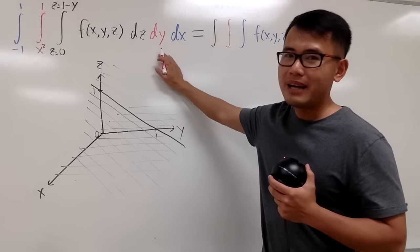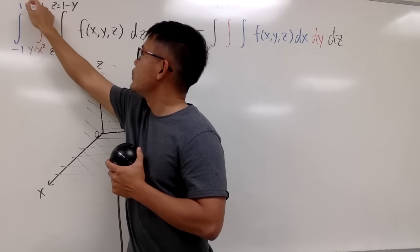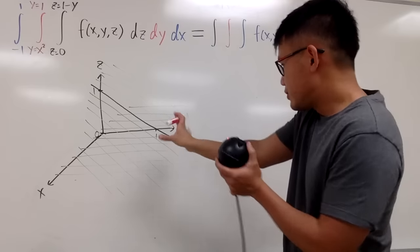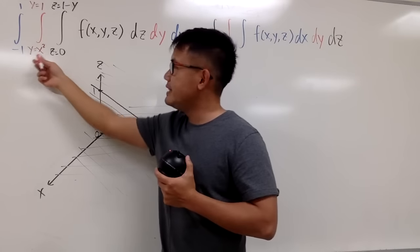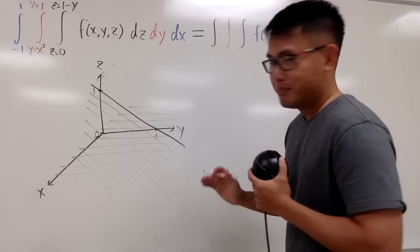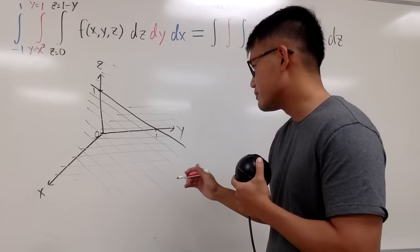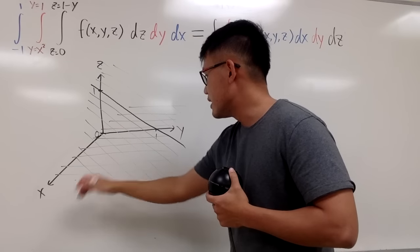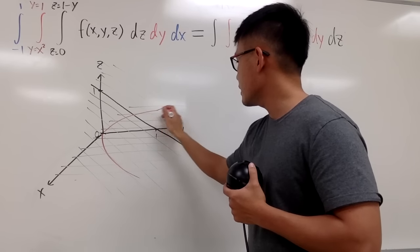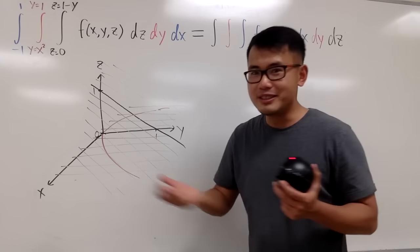Moving on to dy: y goes from x squared up to y equals 1. We are talking about the xy plane now, and you have to tilt your head a little bit. To graph y equals x squared — that's a parabola — but do it carefully because this is the y-axis and this is the x-axis, so the parabola will look like this. We start with this parabola as the base, and you make a vertical cut like this.